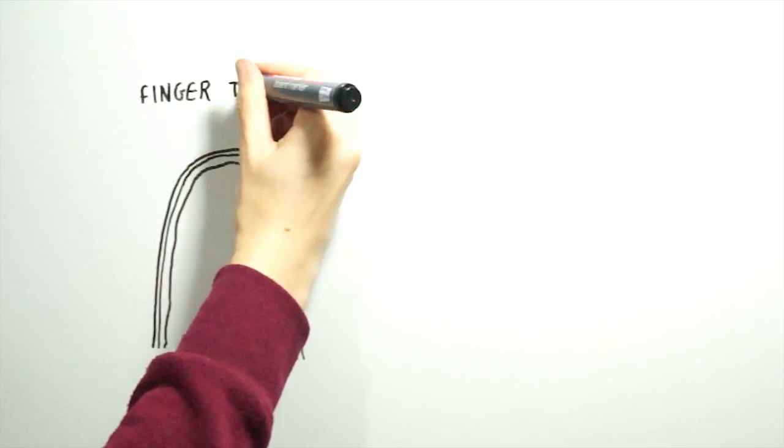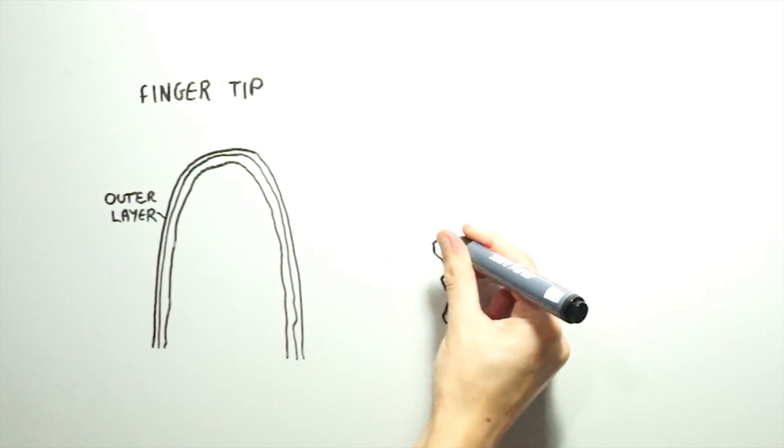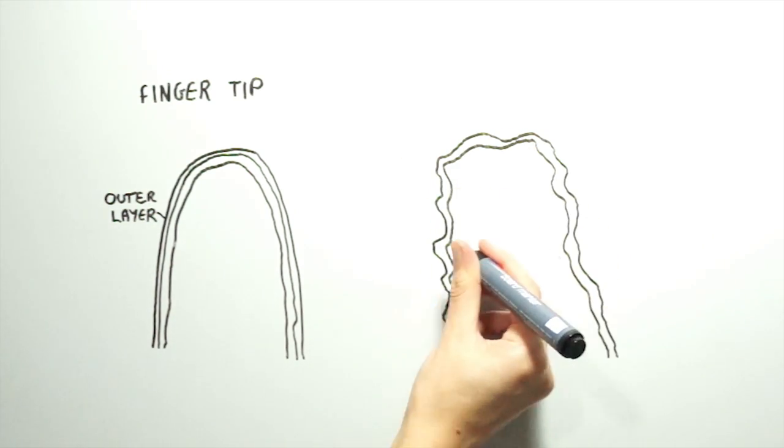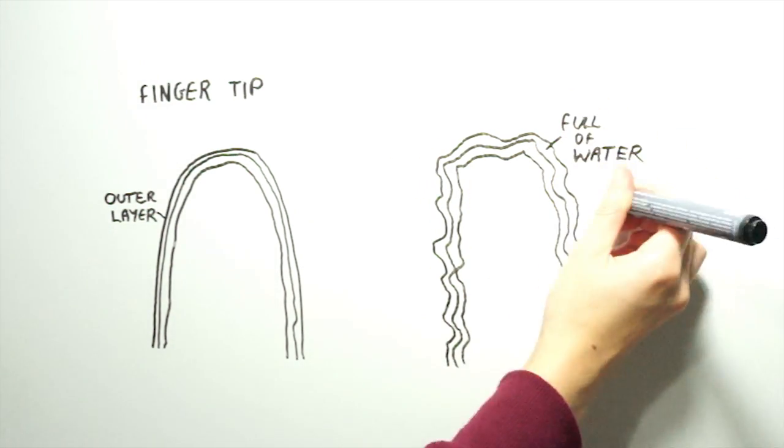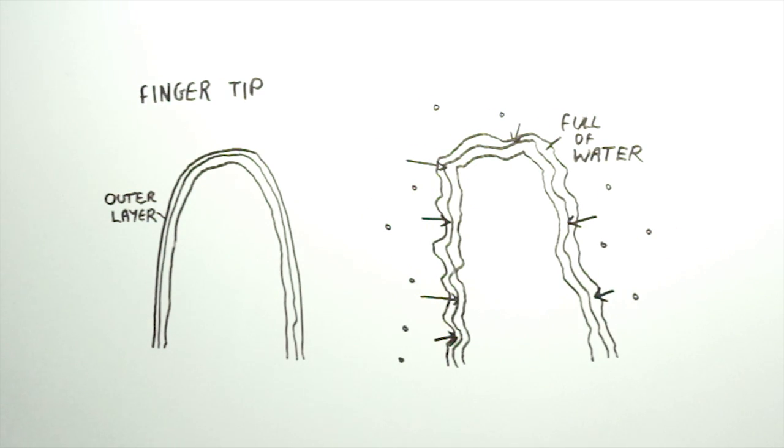Originally, it was thought the skin would wrinkle on our fingertips and toes because the outer layer of skin would absorb water. This would cause it to increase in volume and expand, but because it's still attached to the lower layers of skin, it compensates this expansion by wrinkling.